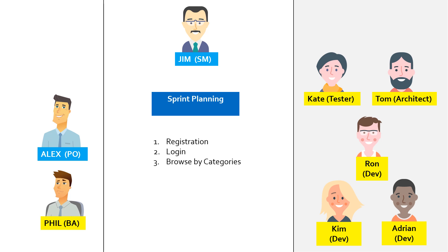Story points in Agile are in Fibonacci series: 0, 1, 1, 2, 3, 5, 8, 13, and so on. For a story, maximum story points would be 13. If it is more than 13, then the story should be broken down into two stories.